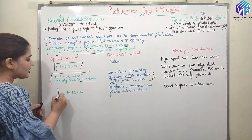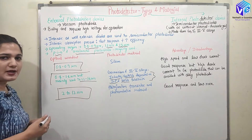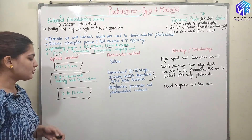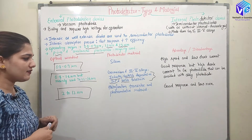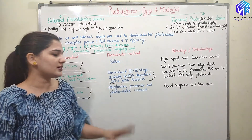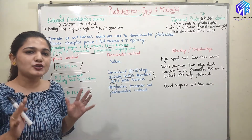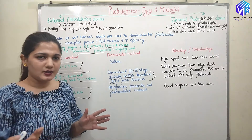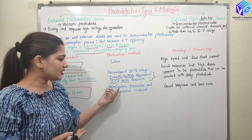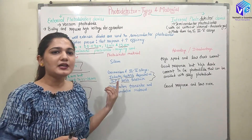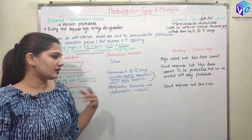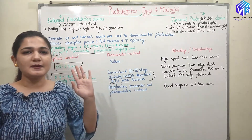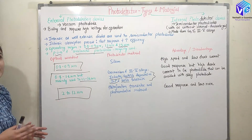Coming to the largest wavelength range of 2 to 12 micrometers — this is the third generation range. Here we can use the heterojunction transistor. Heterojunctions have junctions formed by two different materials, and we can also use photoconductive material. This provides good response time and comparatively very low noise.